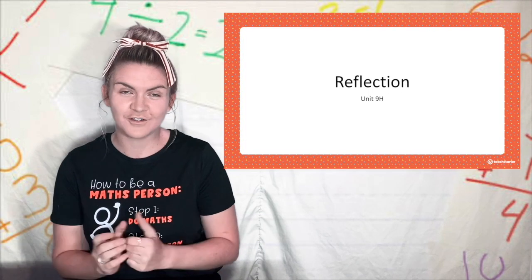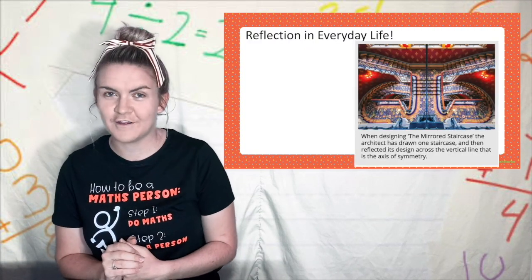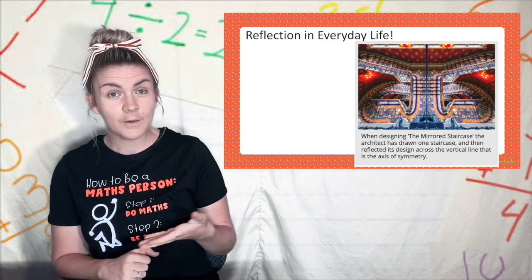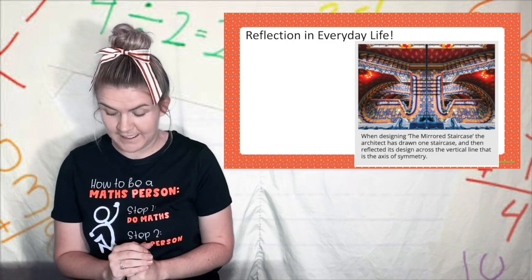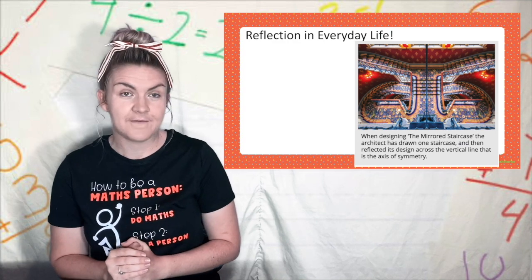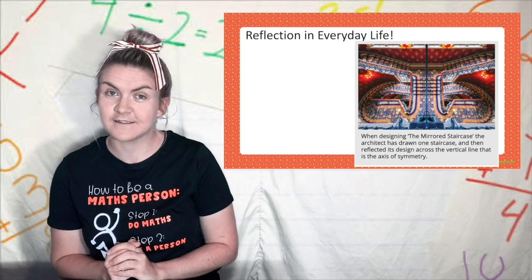We are now going to look at our second type of transformations, reflections. I'm sure you can think of many examples of reflections in everyday life. When designing this mirrored staircase the architect had drawn one staircase and then reflected its design across the vertical line that is the axis of symmetry.